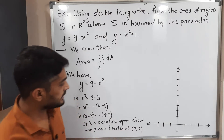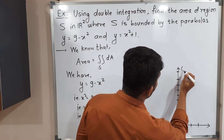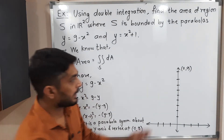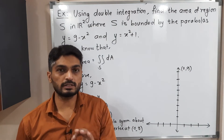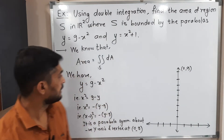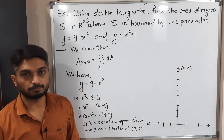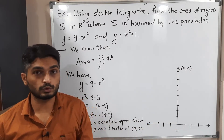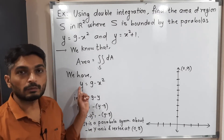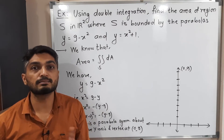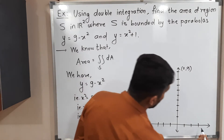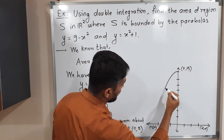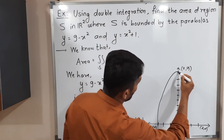Let me draw the parabola. Vertex is at (0, 9). Since it opens downward, it will cut the x-axis at two points. To find those points, I put y = 0: x squared = 9, so x = ±3. This parabola cuts the x-axis at (3, 0) and (−3, 0). Here is the rough sketch of the first parabola.